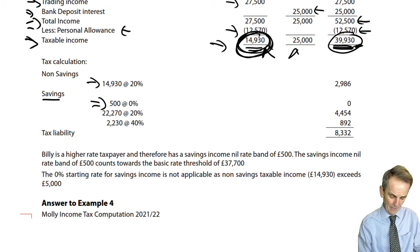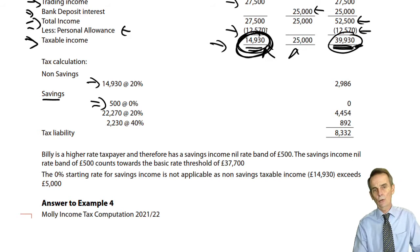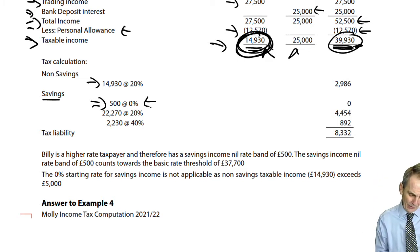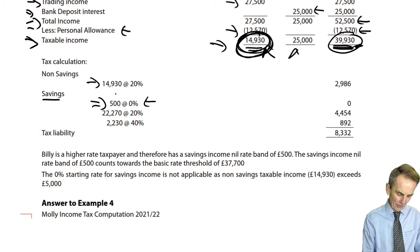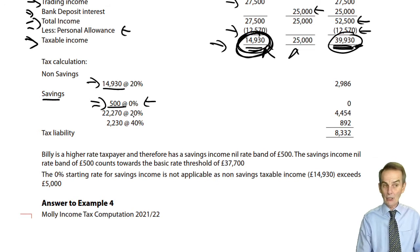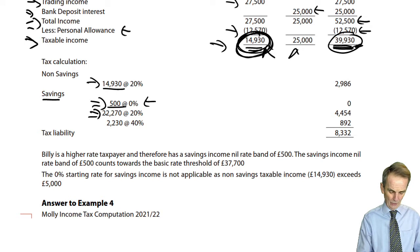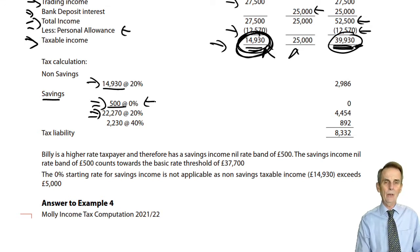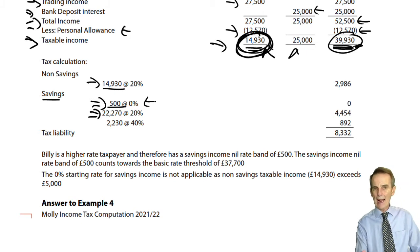The critical figure is: what is the taxable non-savings income? If it's less than £5,000 and we have savings income, you'll look at applying the 0% starting rate. We've got the £500 savings income nil rate band because Billy is a higher rate taxpayer. Then £4,930 plus £500 is £15,430. Take that away from £37,700, leaving a balance of basic rate band available at £22,270. That savings income nil rate band eats up part of the basic rate band limit.